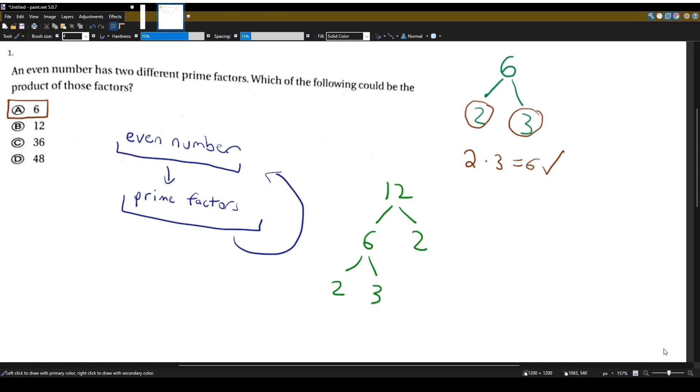So we have that the prime factors of 12 are again 2 and 3. But it's saying, can we take the product of the two different prime factors and get back our original number? Well, 2 times 3 will give us 6, and 2 times 2 are not different prime numbers. So that's why 12 doesn't work out.